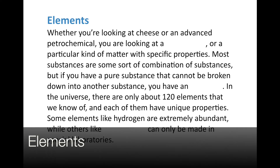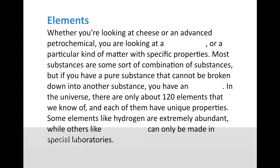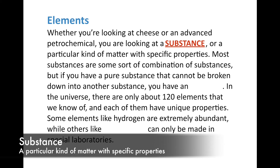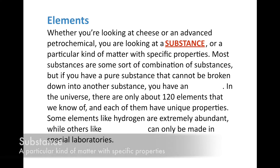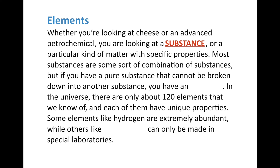First off, we have elements. Now, whether you're looking at cheese or an advanced petrochemical like diesel, you are looking at a substance — a particular kind of matter with specific properties. Most substances are some sort of combination of other substances. But if you have a pure substance — it's only one type of substance — like oxygen, you can't break it down into anything else unless you're breaking it down into subatomic particles. What you have is what we call an element.